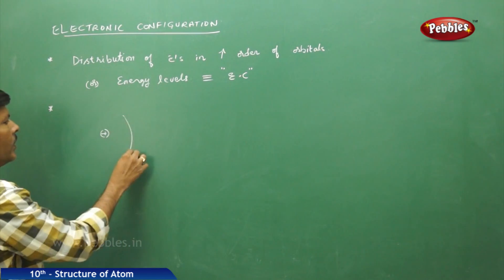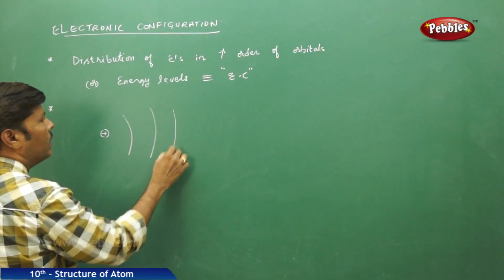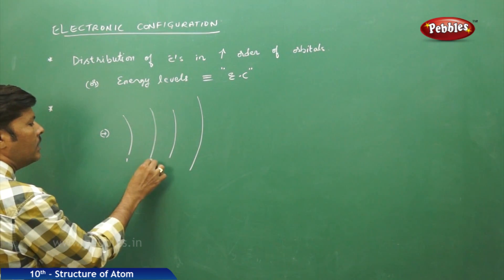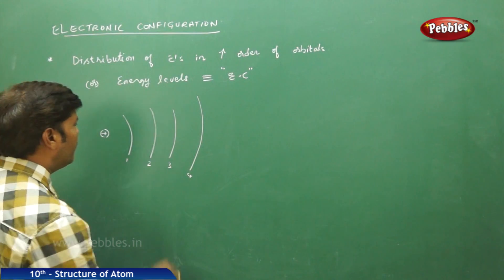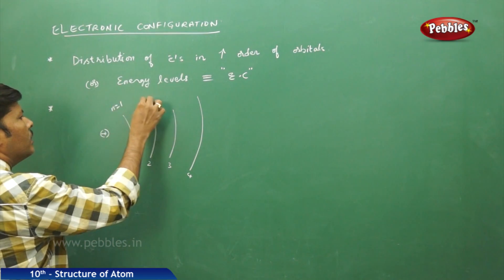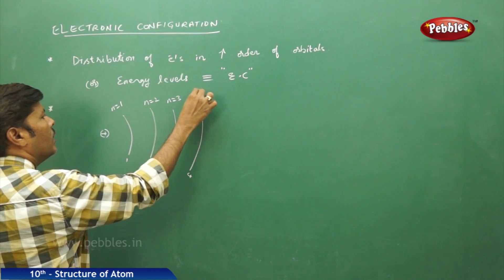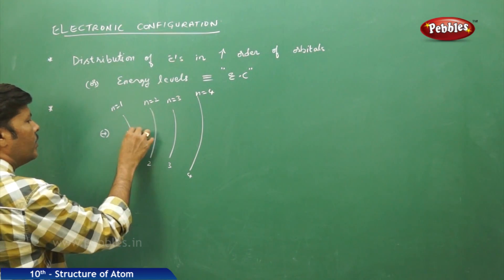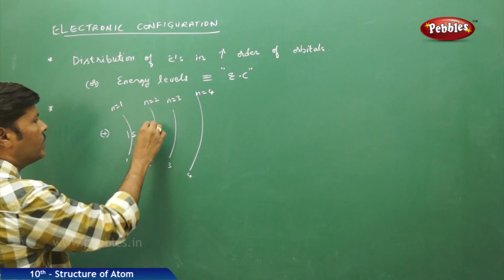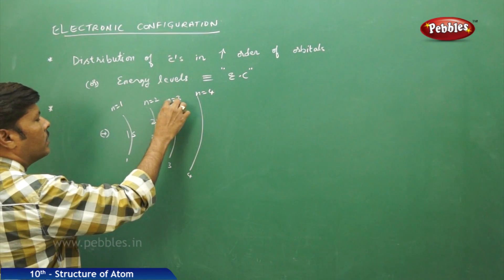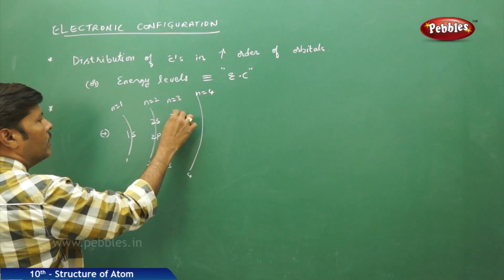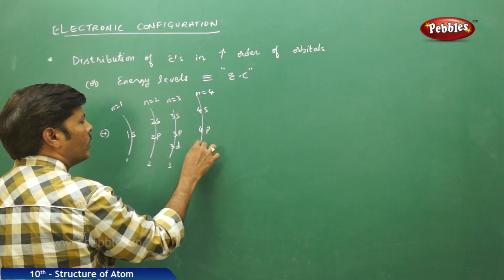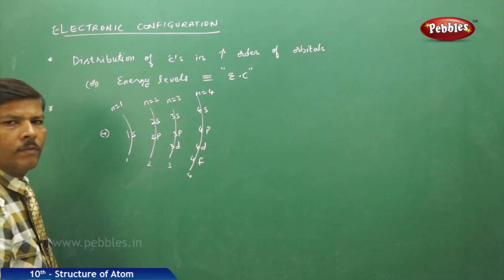If you take the nucleus of an atom with its first, second, third, and fourth shells — the first energy level has principal quantum number 1, the second has n=2, third n=3, and fourth n=4. The orbitals assigned are: 1s for the first shell; 2s and 2p for the second; 3s, 3p, and 3d for the third; and 4s, 4p, 4d, and 4f for the fourth shell.